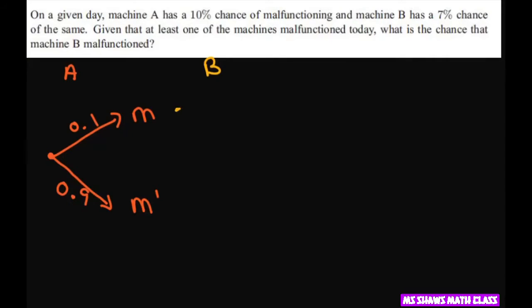And then let's do Machine B. Machine B is 0.07 for malfunction and 0.93, because these two have to add up to one, for not malfunction.